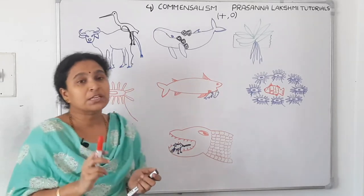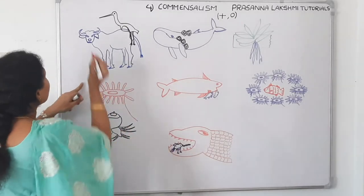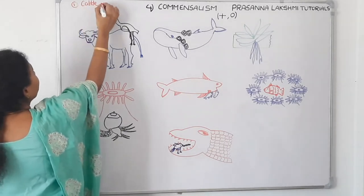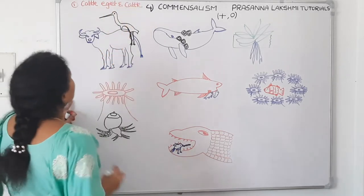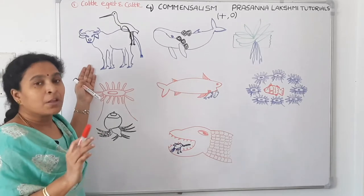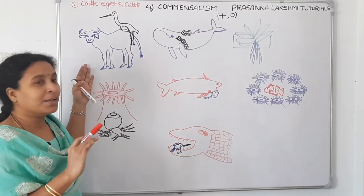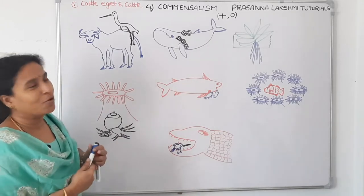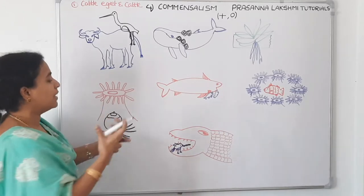The first and foremost example — the classical example for commensalism — is the cattle egret and the cattle. When the cattle grazes on the grass, the egrets follow the cattle. When they are feeding on the grass, they stir it up, and the insects flush out and come flying. These insects are then eaten by the egrets.